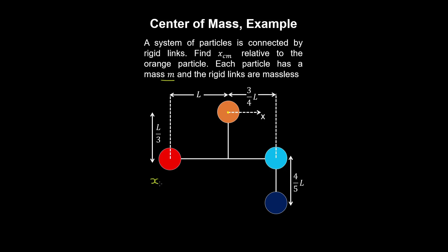So writing our expression for the center of mass, what we do is multiply the horizontal distance to the particle relative to the orange particle as we're asked, and then multiply that by the mass of the particle.